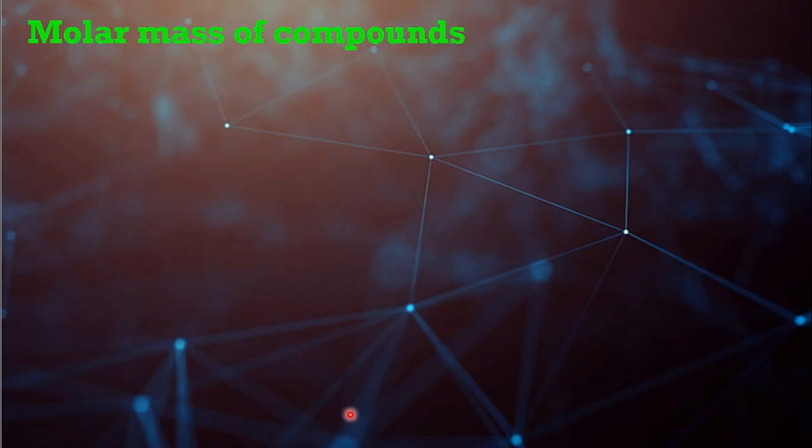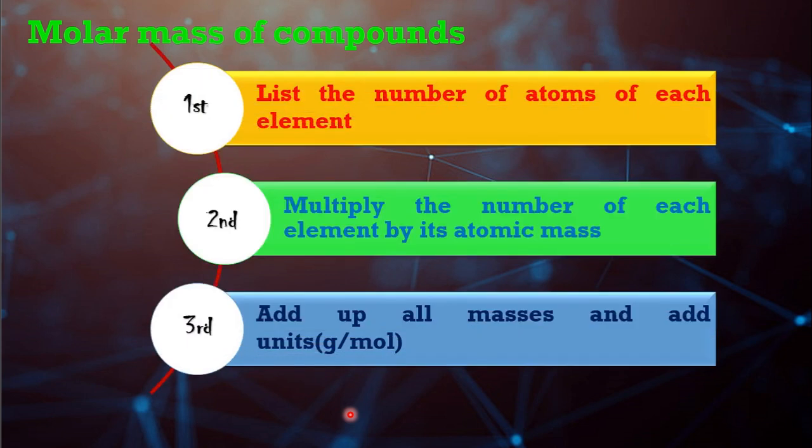Now, let's consider how to calculate the molar mass of compounds. We can calculate the molar mass of compounds by using three simple steps. First, list the number of atoms of each element. Then, multiply the number of each element by its atomic mass. And finally, add up all masses and add units.